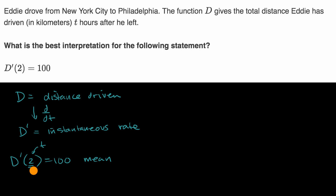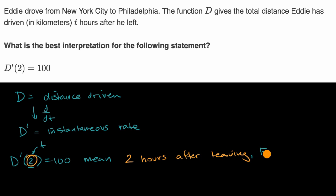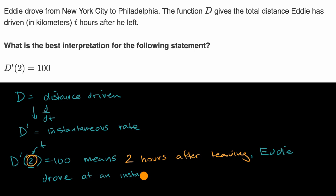So two hours after leaving, Eddie drove at an instantaneous rate of 100. Let me color-code this to make it clear: two hours after leaving, Eddie drove at an instantaneous rate of 100.